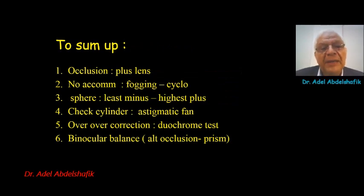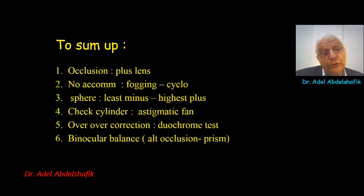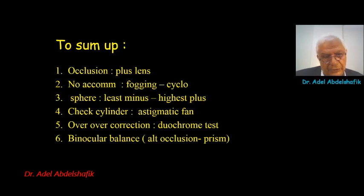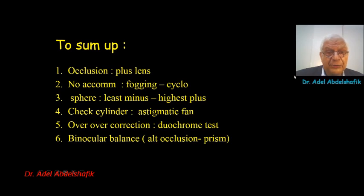To summarize: we occlude one eye — preferably with a plus lens rather than an opaque occluder. We avoid accommodation by cycloplegic or fogging. We check the sphere until we reach the least minus or highest plus. We check the cylinder with methods like the astigmatic fan. Then we recheck that we are not over-correcting the patient using the duochrome test. Finally, we check binocular balance either by alternating occlusion or prism dissociation.